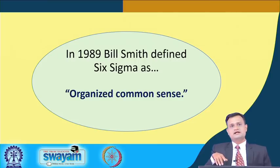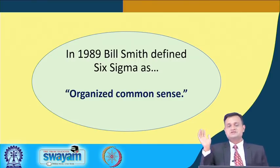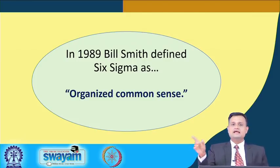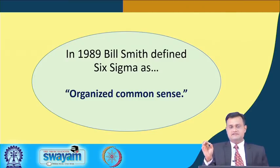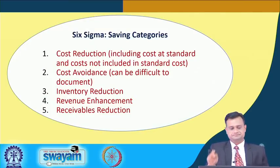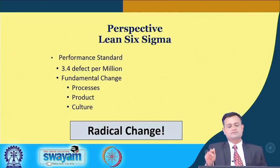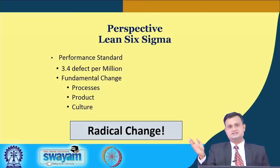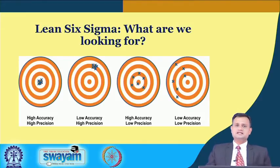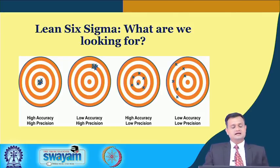In 1989, Bill Smith defined Six Sigma as 'organized common sense.' It is a systematic approach through the DMAIC cycle — organized common sense to identify the root cause, identify the appropriate solution, control it, and then sustain it. Six Sigma can bring enormous benefits in terms of cost reduction, cost avoidance, inventory reduction, revenue enhancement, and receivable reduction. It enables radical improvement — drastically improving your defect rate by improving your sigma level. The representations of high accuracy and high precision, low accuracy and high precision, high accuracy and low precision, and low accuracy and low precision show that ideally we want processes to achieve high accuracy and high precision, meaning close to target with consistent readings.